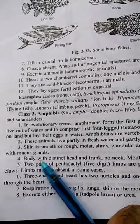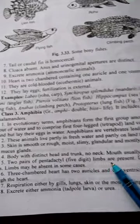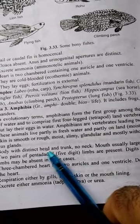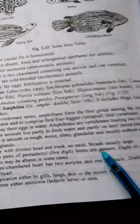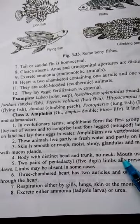Point number four: body with distinct head and trunk, but no neck. They have head and trunk but they don't have a neck. Mouth is usually large, as seen in the frog.